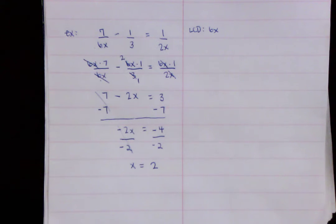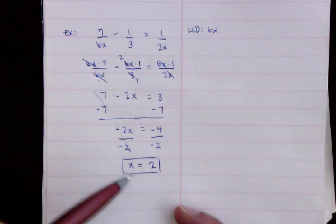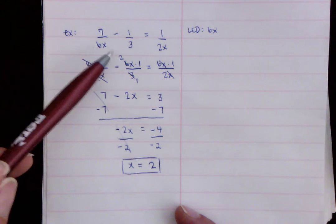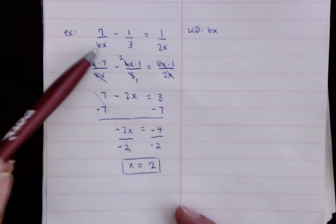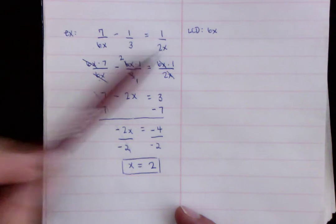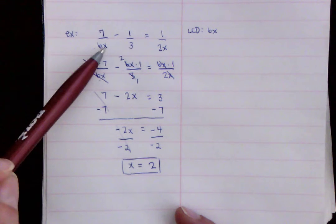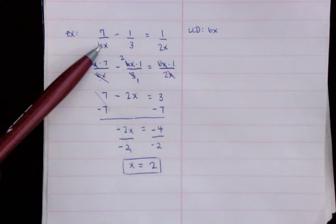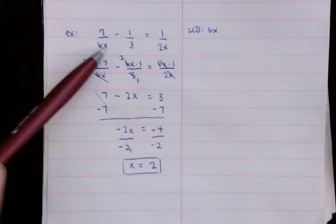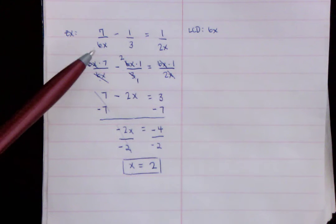And again, the thing is, you want to always go back and make sure you plug in this into the original one. But since this number, if I plug it into the bottom of both of these, where X is, I notice that this does not make the bottom zero. So 7 divided by 6 times 2, that's 7 divided by 12. It's not going to make the bottom of the denominators zero by plugging it back in. So I know it's okay.